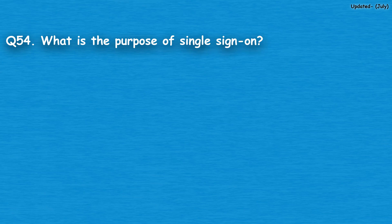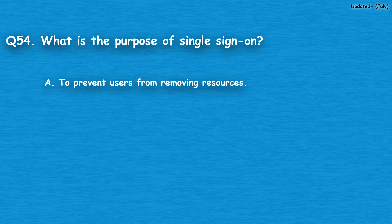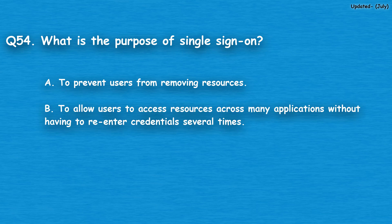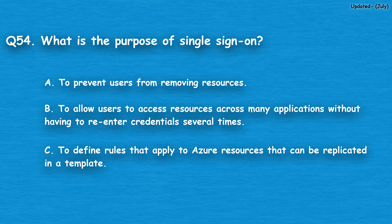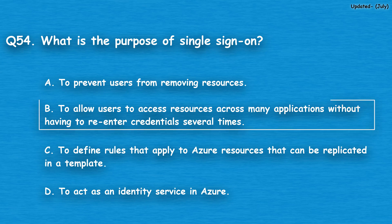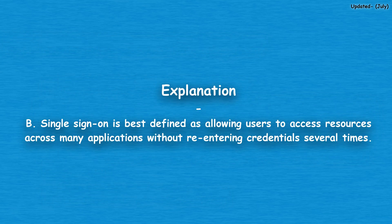Question number 54: What is the purpose of single sign-on? Option A: to prevent users from removing resources. Option B: to allow users to access resources across many applications without having to re-enter credentials several times. Option C: to define rules that apply to Azure resources that can be replicated in a template. Option D: to act as an identity service in Azure. The correct answer is option B. Single sign-on is best defined as allowing users to access resources across many applications without re-entering credentials several times.